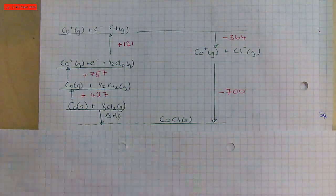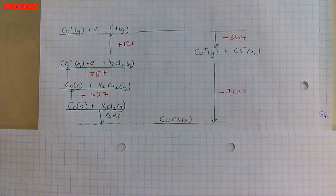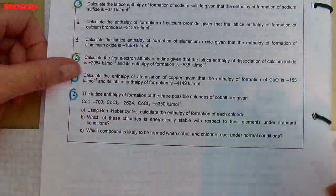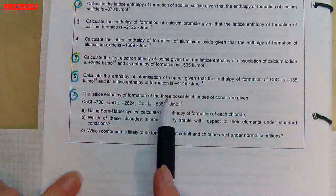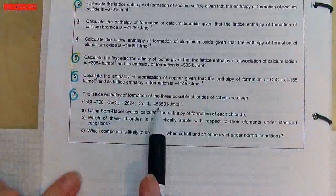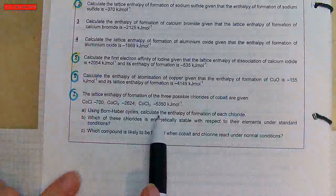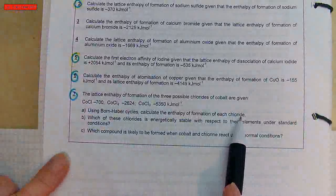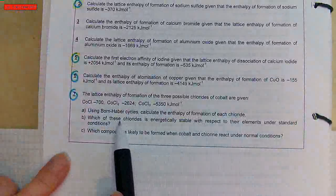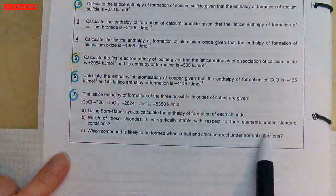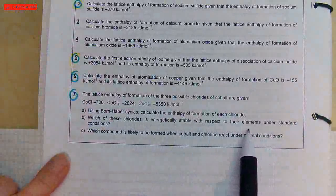I'm looking at calculating the Born-Haber Cycle for three chlorides. The lattice enthalpy of formation is given for cobalt 1, cobalt 2, and cobalt 3 chloride. I'll need to draw a Born-Haber Cycle and calculate the enthalpy of formation for each chloride. Once I've got those, I can compare them and see which one is energetically more stable when produced from their elements, and which one is most likely.